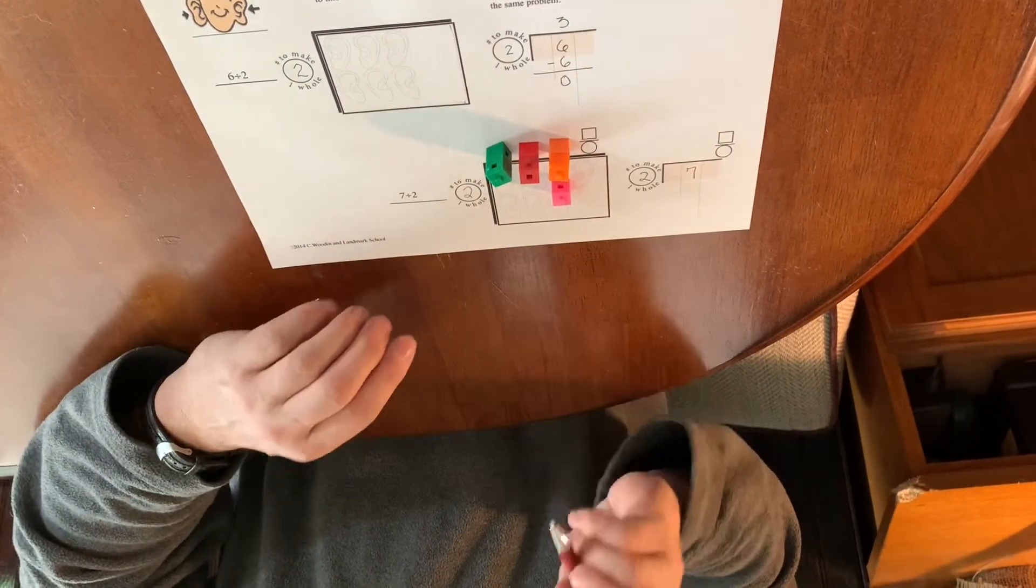We start, how many whole pairs of ears can we get? One, two, three. That's all I can get in terms of whole pairs.